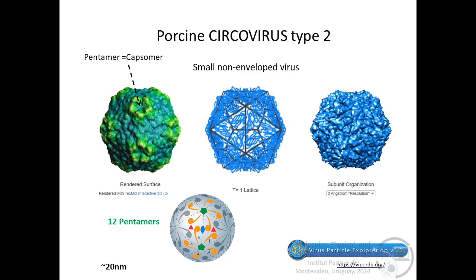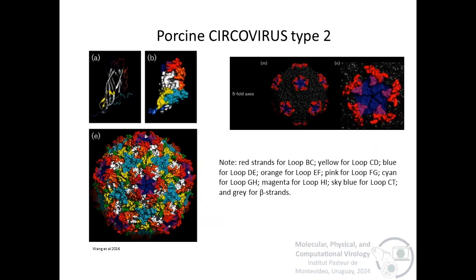This type of capsid corresponds to a T or triangulation number equal to one. And in this case, each subunit corresponds to the structural unit. An example of a capsid built with the minimum number of subunits is the capsid of porcine circovirus type 2, which infects pigs, and is a very small non-enveloped virus of about 20 nanometers, with a genome of about 1,800 nucleotides. Five subunits of the capsid protein or five protomers interact at each of the 12 vertices observed under the electron microscope as pentamers, which are the morphological units or capsomers. In total, the capsid of PCV2 has 12 pentamers.